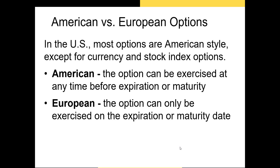Not all options are the same. Some allow you to exercise them at any day until expiration, while others only allow you to exercise on the maturity date. The former are called American options and the latter are called European options. American options are the most common for stocks — you can exercise at any point until maturity, usually on the third Friday of a month. European options are commonly used for currency and indexes. Note that the names have nothing to do with geographic region.